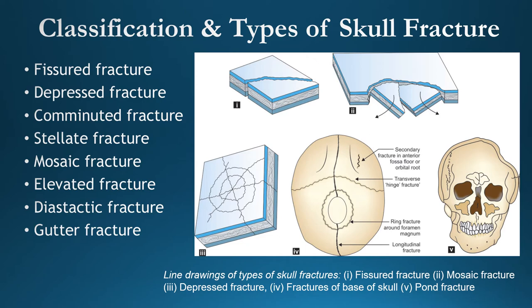Depressed fracture is one wherein the fractured bone fragment is driven inward below the adjacent skull surface. It may correspond in shape and size to the causative weapon, which is why it is also called a striking surface fracture or signature fracture. This provides clues about the causative weapon — hammer, stick, stone, or wrench. A comminuted fracture means the bone is broken into several pieces of different sizes.